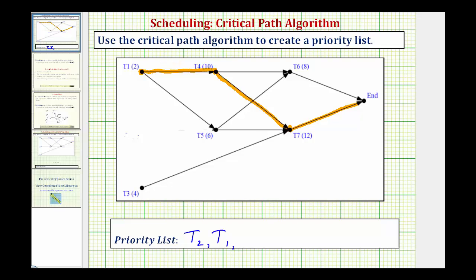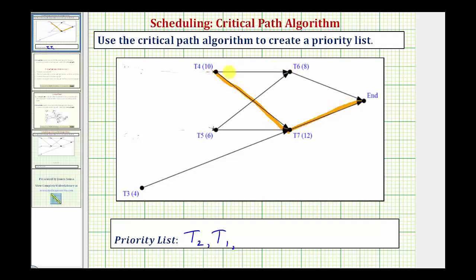Now we eliminate task one from the digraph and repeat. We're looking for the longest path. If we go from task four to task six to the end, that would be 18 hours. But if we go from task four to task seven to the end, that would be 22 hours. Starting at task five, from task five to task seven to the end is only six plus 12, or 18 hours. And from task five to task six to the end is only six plus eight, or 14 hours. So the critical path takes ten plus 12, or 22 hours, and therefore task four is next in our priority list.